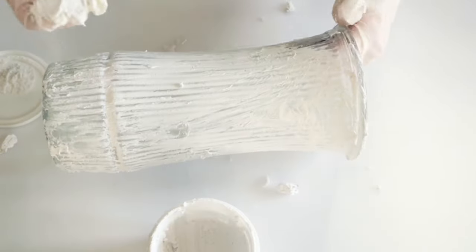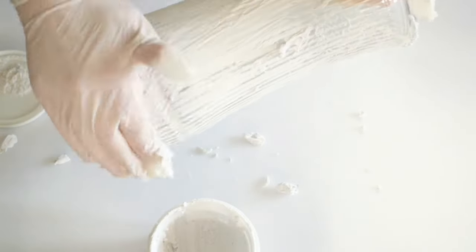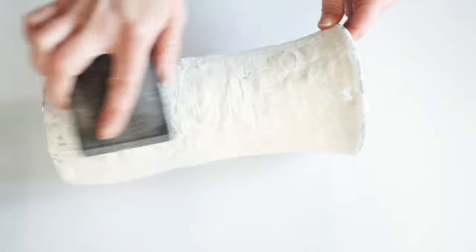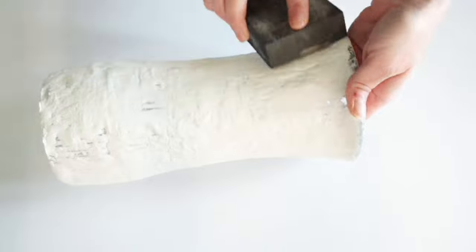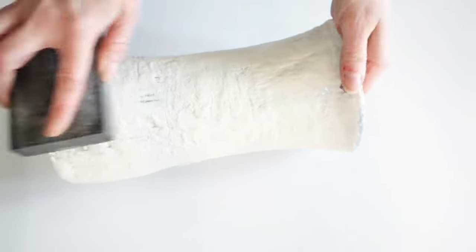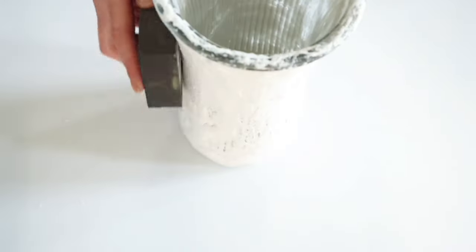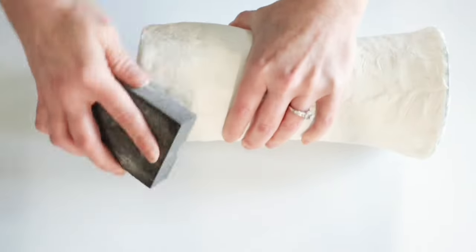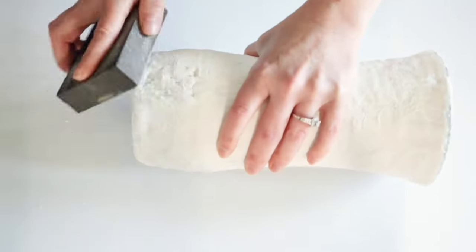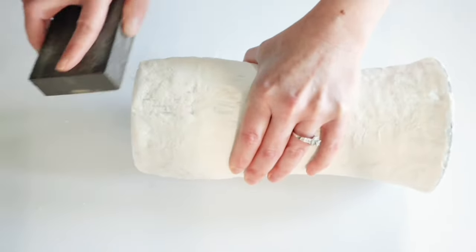Now, once it was dry, I went ahead and I took a Dollar Tree sanding block, and I am very lightly, very gently going to go over this. You don't want to completely sand this down because the whole point is to get that nice texture.